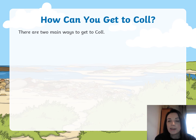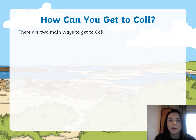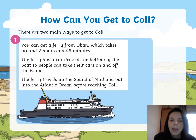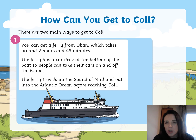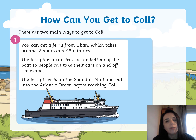How do you get to Coll? Because obviously it's an island. There are two main ways. The first way is by getting a ferry — a large boat that carries lots of people — from Oban, which takes around two hours and 45 minutes. The ferry has a car deck at the bottom so people can take their cars on and off the island.